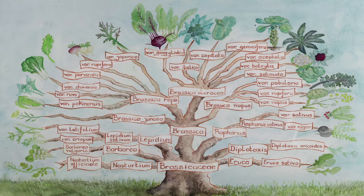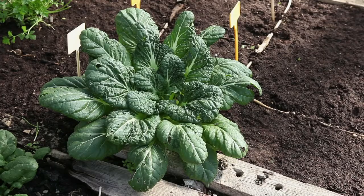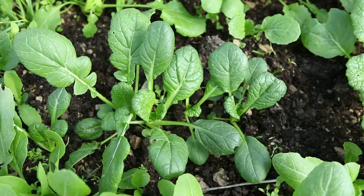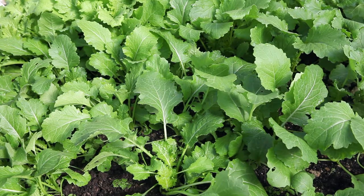The turnip is a member of the Brassica family, the Brassica rapa species and subspecies. Brassica rapa includes a great variety of subspecies, such as bok choy, Komatsuna or Japanese mustard spinach, broccoli rabe and many more.